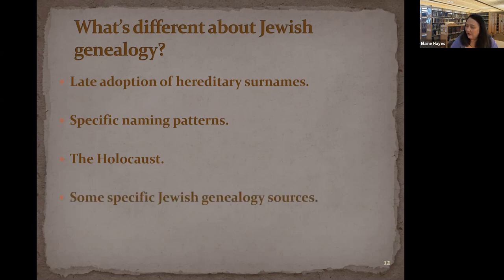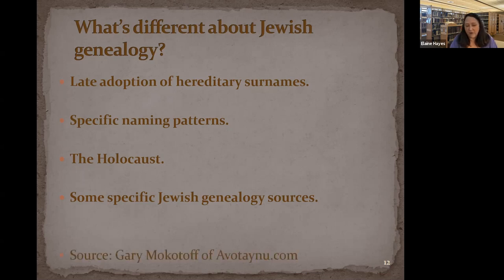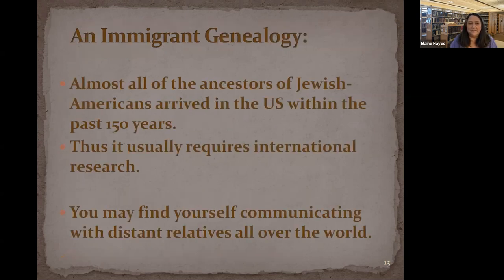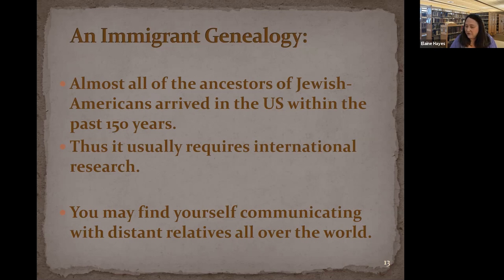Often people don't realize this until they start doing genealogy, because these are family members who stayed behind in Europe when their direct ancestors immigrated — they may have lost contact with that part of the family. But once you start doing genealogy, you'll usually find someone who was killed in the Holocaust. There are also specific Jewish genealogy sources, which is mostly what this class is about. Jewish genealogy is an immigrant genealogy, and almost all ancestors of Jewish Americans arrived in the US fairly recently — within the past 150 years.